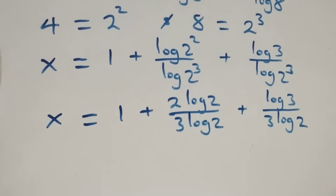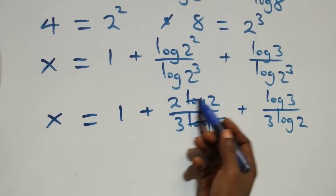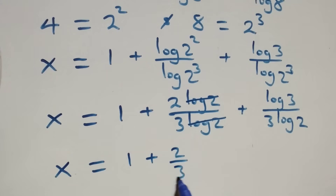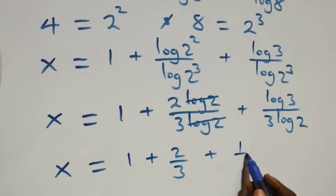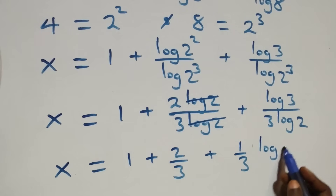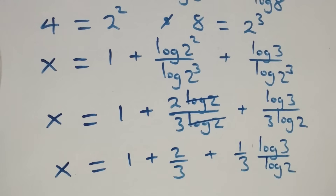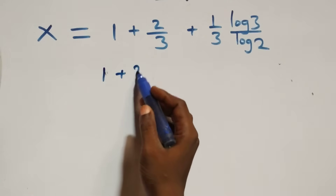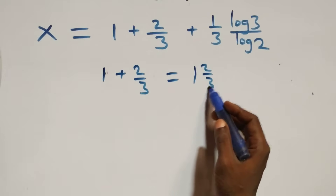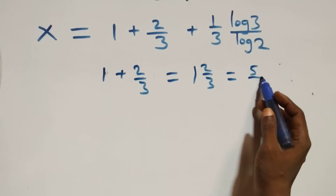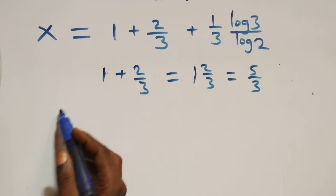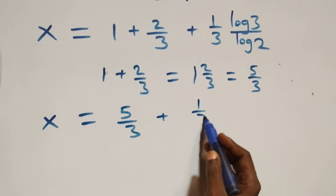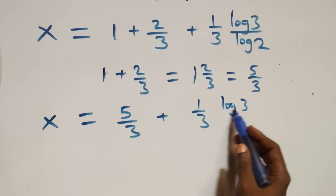Log 2 cancels in the first fraction, leaving 2 over 3. So x equals 1 plus 2/3 plus (1/3)(log 3 over log 2). Now 1 plus 2/3 equals 5/3, so x equals 5/3 plus (1/3)(log 3 over log 2).